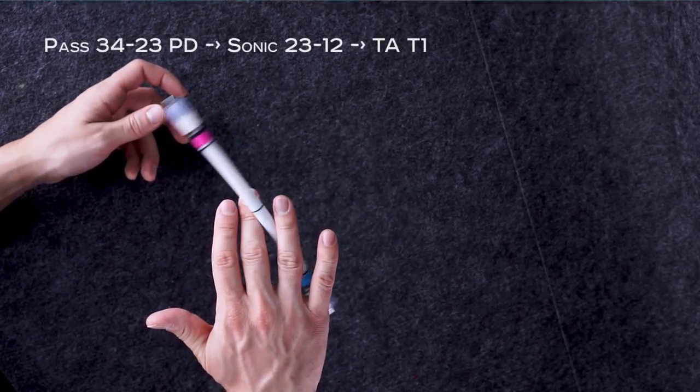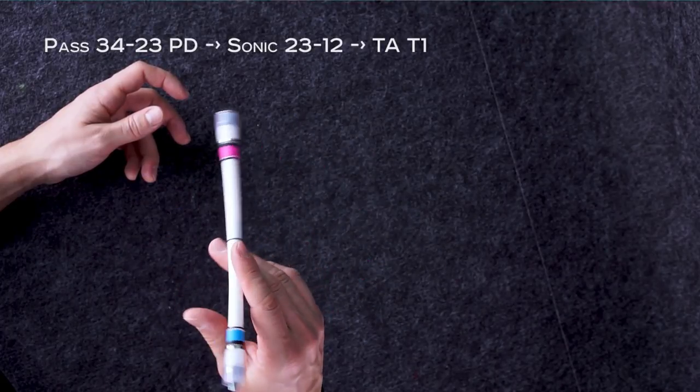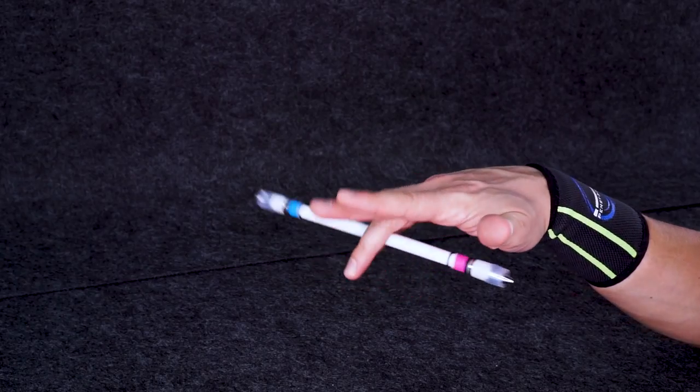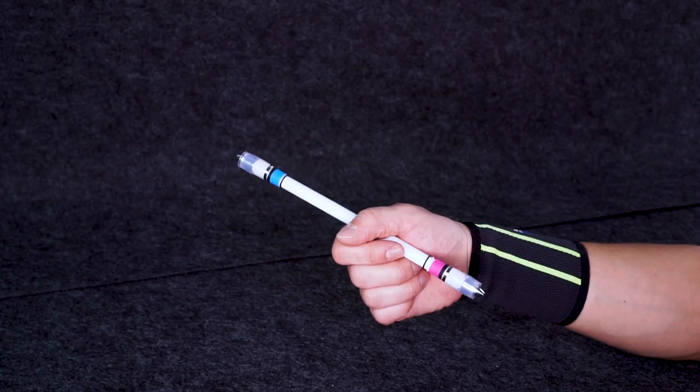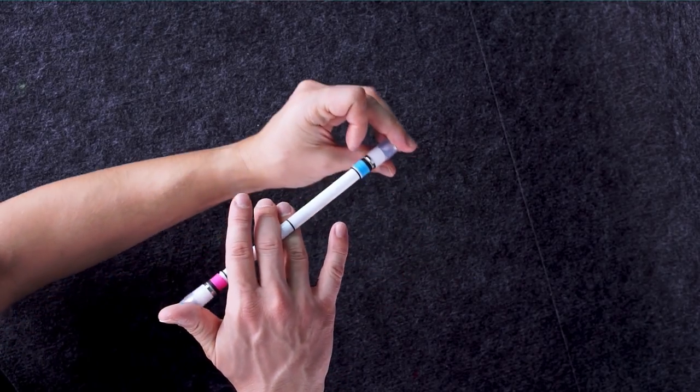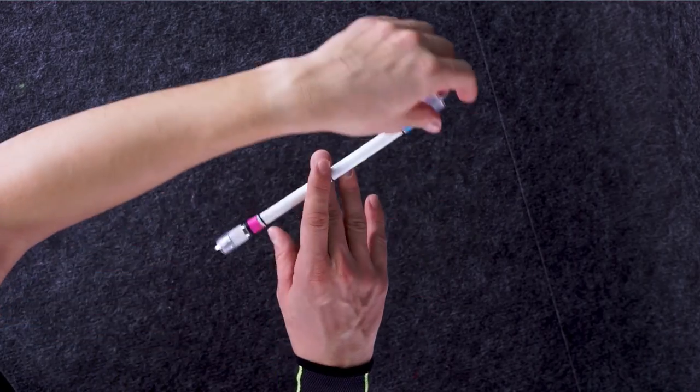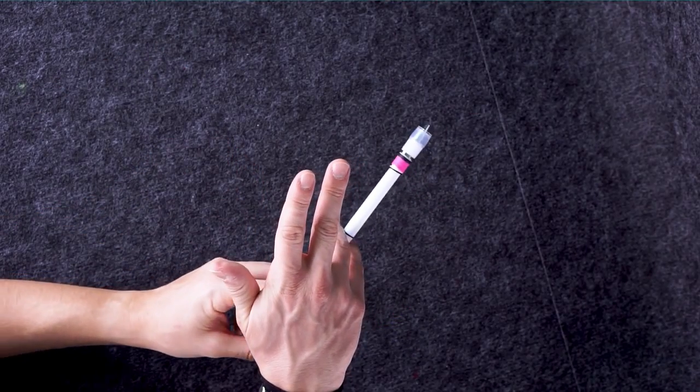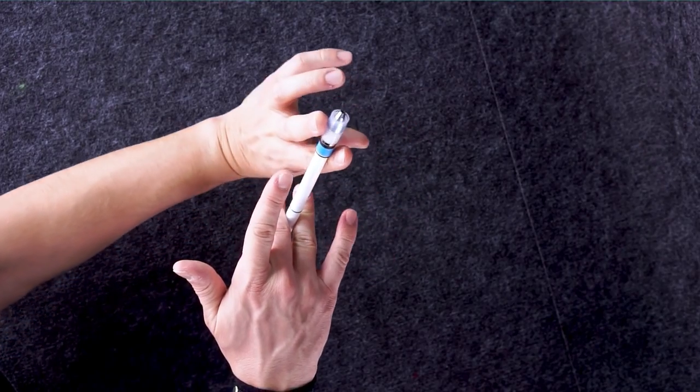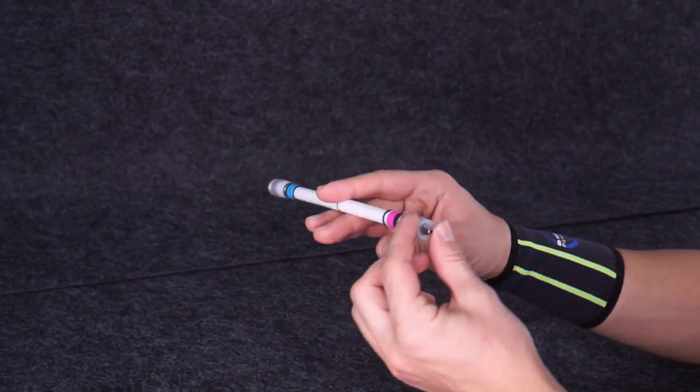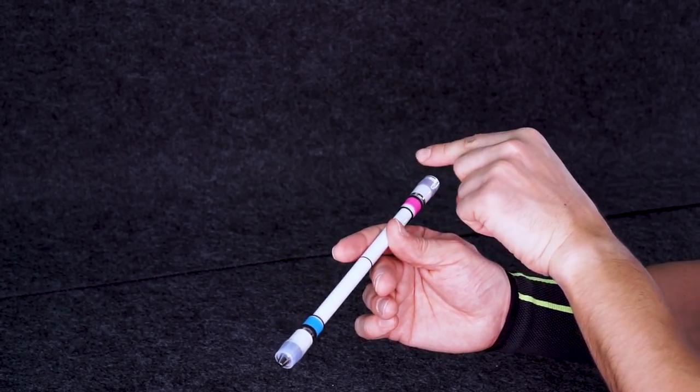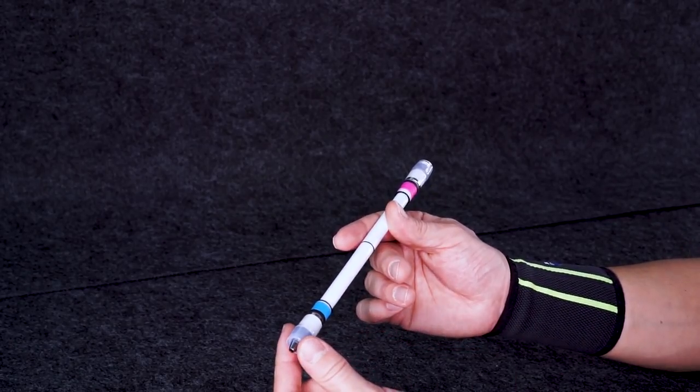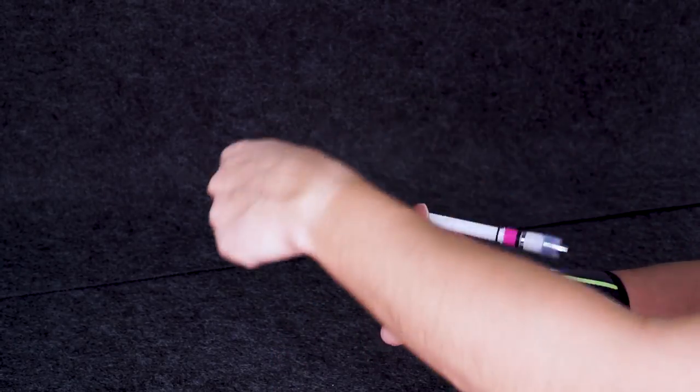Now an easy part. Linkage Pass 3423 palm down, Sonic 2312 to Thumbaround T1. As the pen goes in circle, this movement is going to be pretty similar to Sonic Rise. Make Pass 3423, cover the pen with middle and push it raising ring finger. As your mod shifts to 1-2, turn the wrist palm side, raise Thumb and for the moment hold the pen in T1, then do Thumbaround pushing with your index.